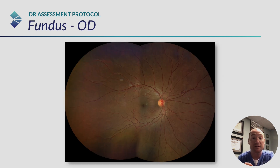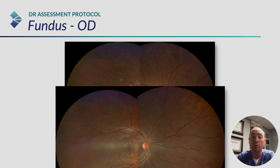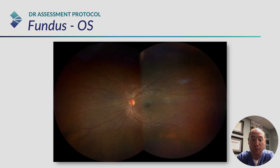A1c of 10.0, certainly higher than we'd like to see. Looking at the fundus from today, we've got some mild hemorrhaging, and it is worse than it was a year ago — where you're not seeing as many of those hemorrhages — so slight progression from a structural standpoint in the right eye.